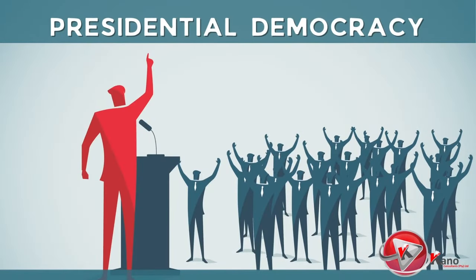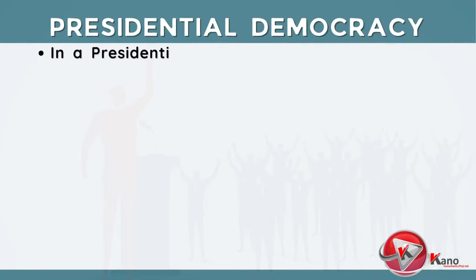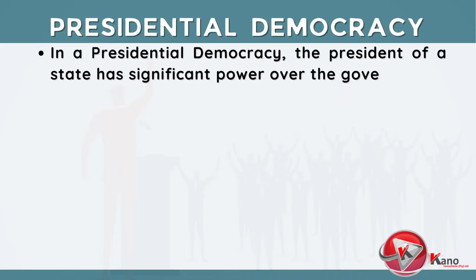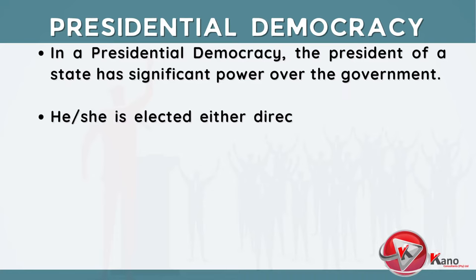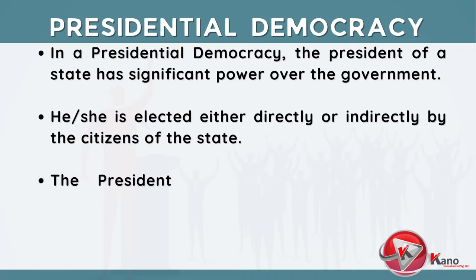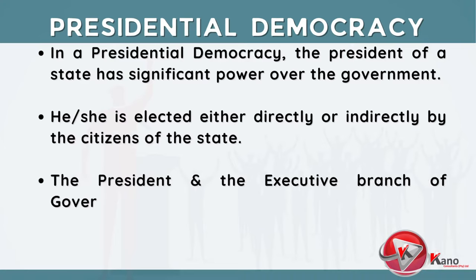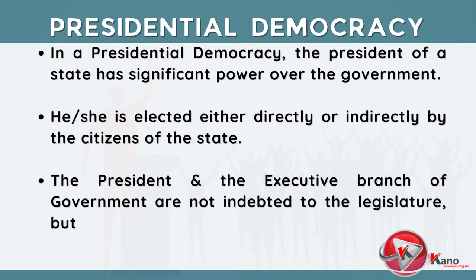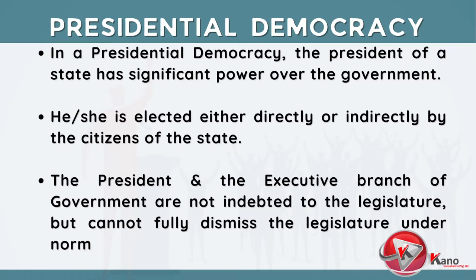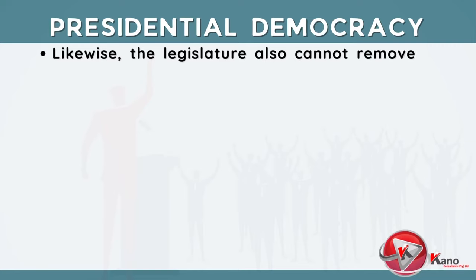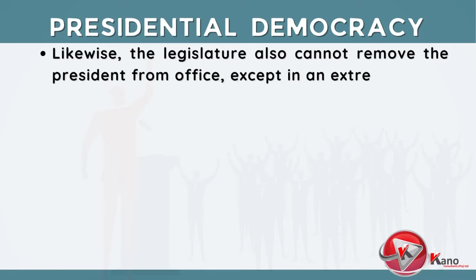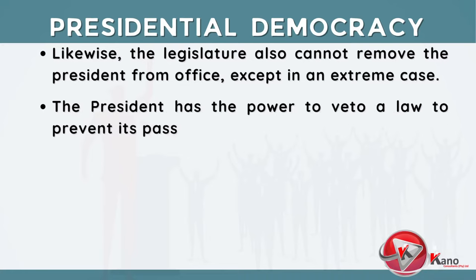The next type of democracy is presidential democracy. In a presidential democracy, the president of a state has significant power over the government. He or she is elected either directly or indirectly by the citizens of the state. The president and the executive branch of government are not indebted to the legislature, but cannot fully dismiss the legislature under normal circumstances. The president also has the power to veto a law to prevent its passage.